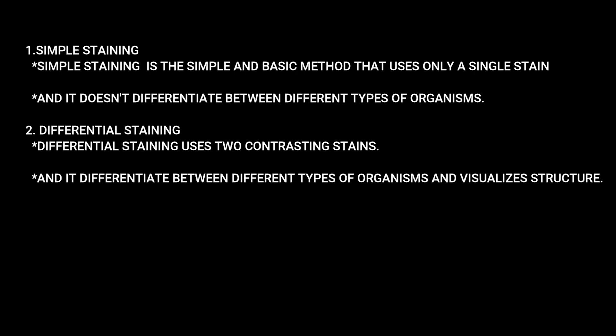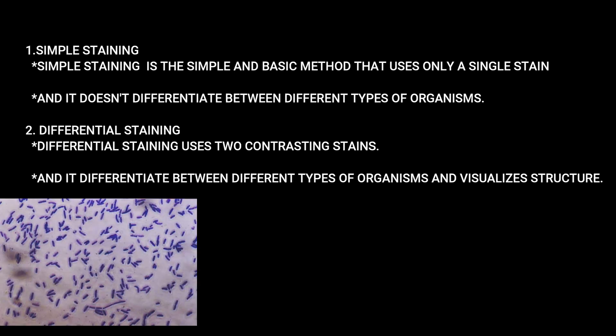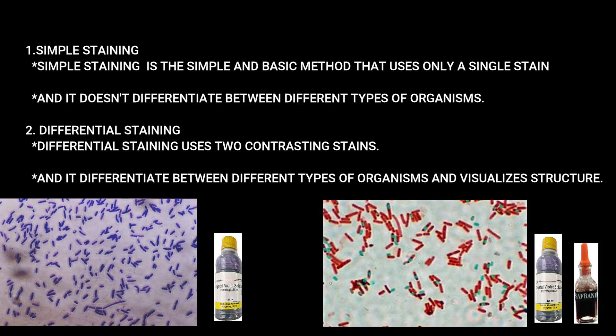Simple staining is a basic method that uses only a single stain, and it doesn't differentiate between different types of organisms. In this method, we can differentiate the structure of the organism.